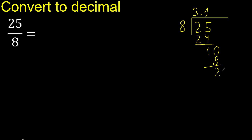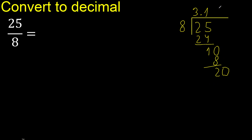Subtract. Always complete with 0 — point is here. 0 point 20. 8 multiplied by 2 is 16.